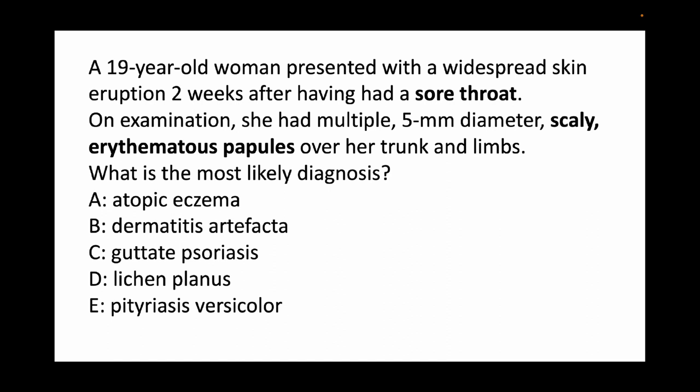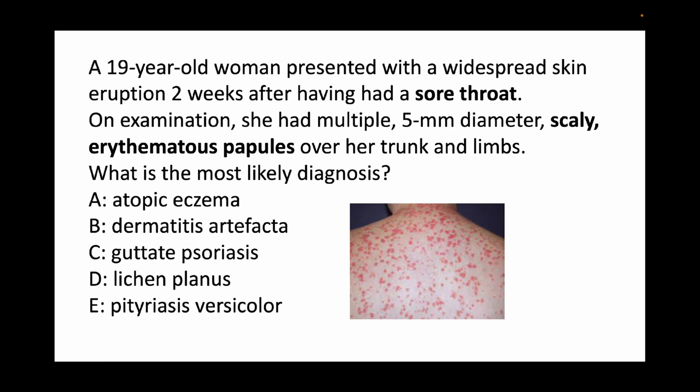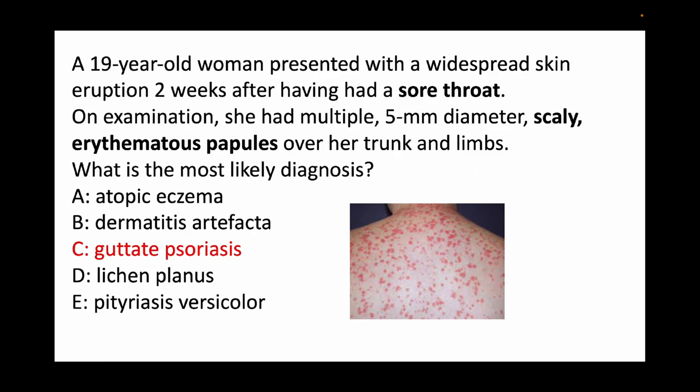Let's look at some MRCP style questions from each subject to identify how we can apply pattern recognition to answer these questions effectively, correctly and quickly. Dermatology is one speciality where you can get a lot of questions which you can answer quickly and easily by identifying the specific pattern of the presentation. For example, a lady has presented with scaly erythematous papules after an episode of sore throat. In MRCP 2 you will also get a picture-based question. This is a classic description of guttate psoriasis — scaly erythematous papules, sore throat, remember it's guttate psoriasis. Do not take more than 5 to 10 seconds to answer these questions.